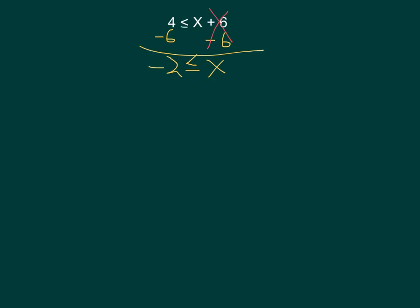In order to graph this on a number line, I always try to get the variable onto the left side. So if we switch the sides and put the x on this side and the negative 2 on this side, we also have to switch the sign around so that the x stays at the wide part, and x is greater than or equal to negative 2.